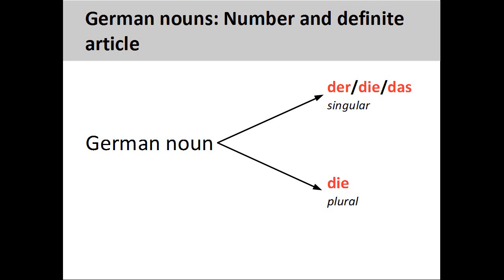Let's now apply what we learned about personal pronouns to German nouns. You will recall from the presentation on German nouns that the grammatical gender of a noun is seen in its definite article. Der indicates a masculine noun, die a feminine noun, and das a neuter noun. There is also a definite article, die, for plural nouns.